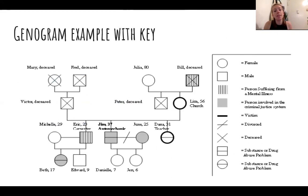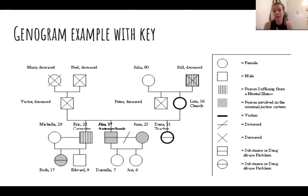Here's a genogram example with a key. You want to make sure you include a key so that when you're looking back, you know which symbols have which meaning. It's also up to you if you want to allow your client to pick what the symbols mean — that's totally fine. You just want to make sure that you're on the same page and you're not making an assumption about what that symbol might be.